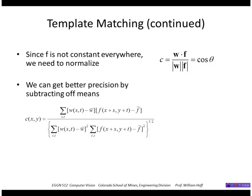Okay, so f is not constant everywhere, so we need to normalize. So let's divide through by the magnitude of our two vectors, w and f.